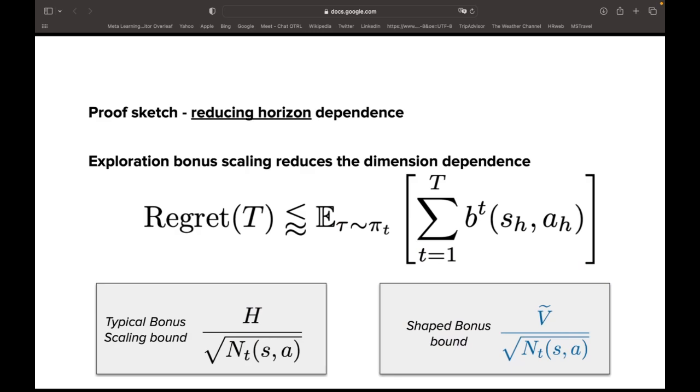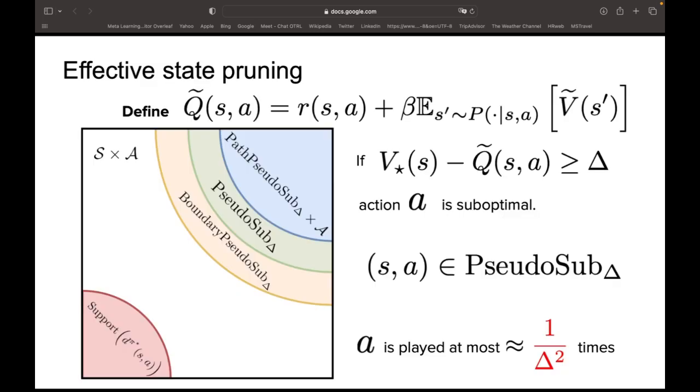We proceed to outline a very brief proof sketch of our main results. We start with the standard regret decomposition that bounds the regret of any algorithm by the expected sum of bonuses under the sampling distribution. From this decomposition, it is easy to see that by defining the shape bonus terms to scale with V tilde instead of H, we can derive an upper bound that trades some factors of H with factors of V tilde.